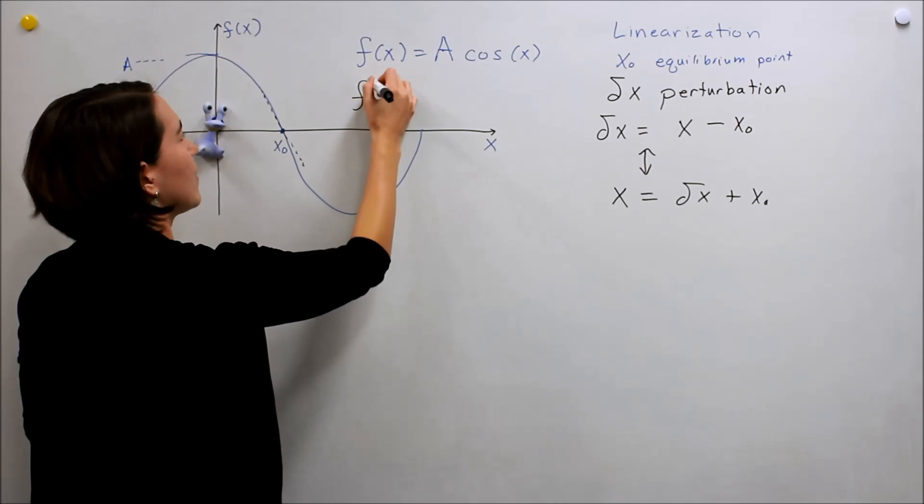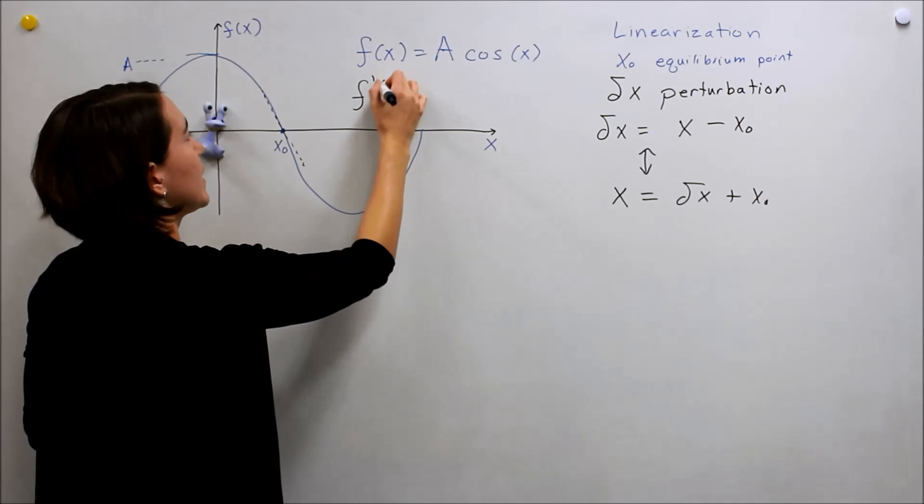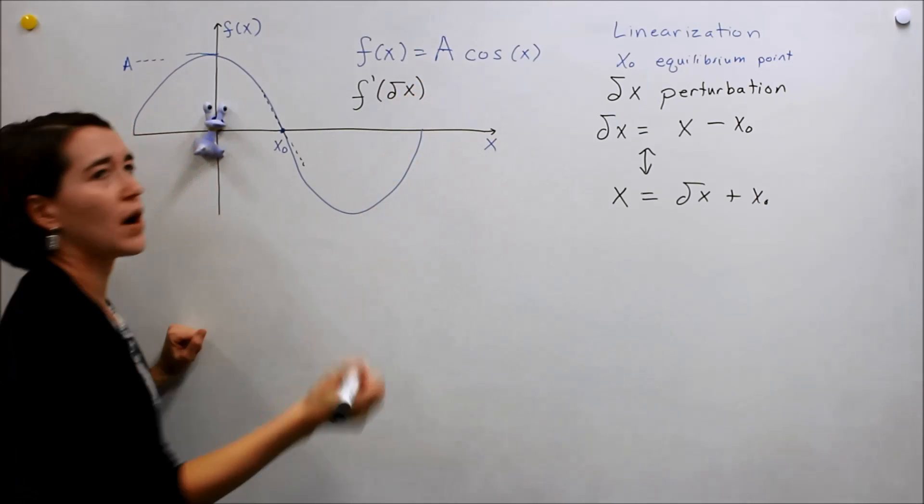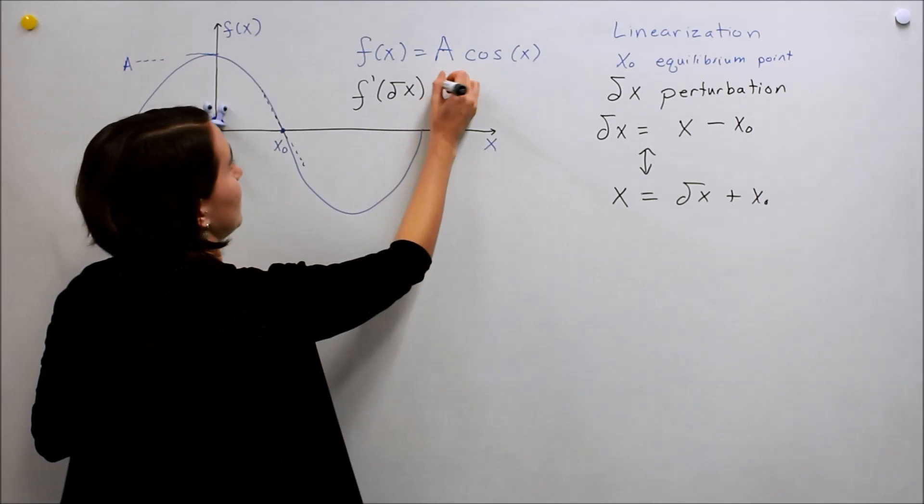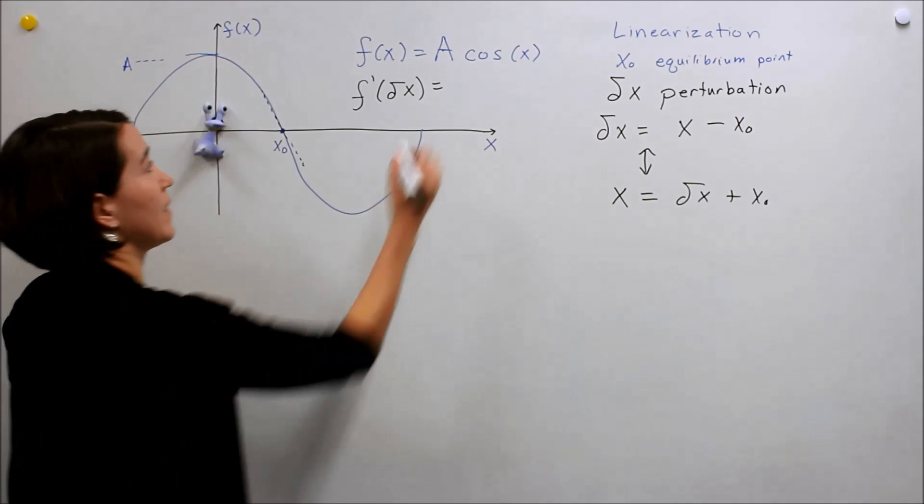What we're really trying to find, I'm going to use prime for now, is our new equation around that point as a function of δx. So how do we find that? That's what we're trying to find.